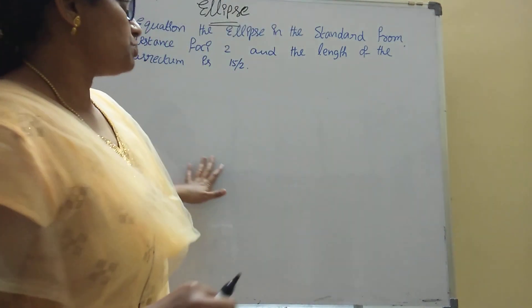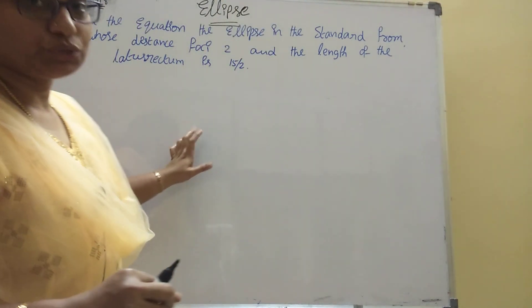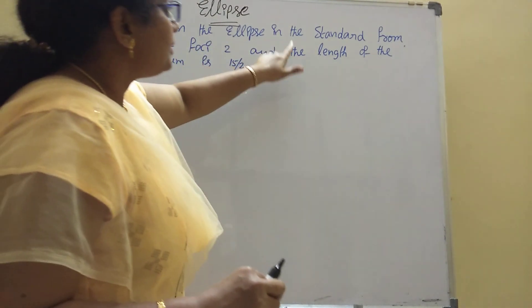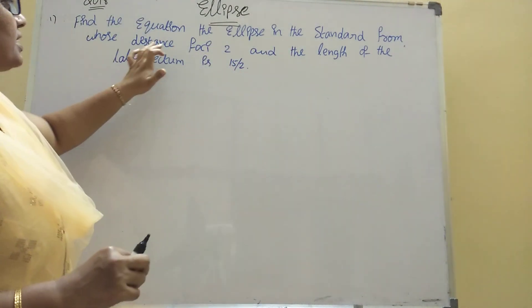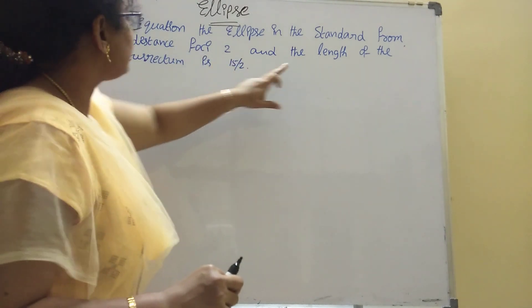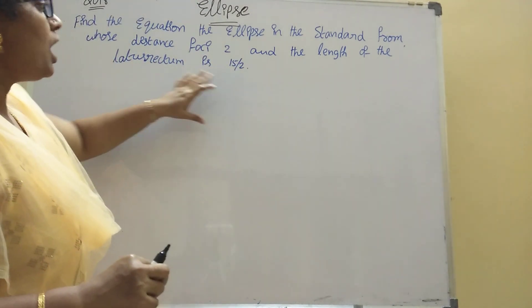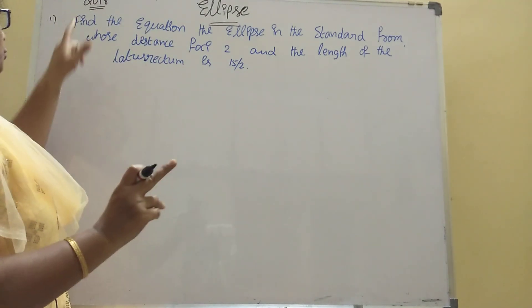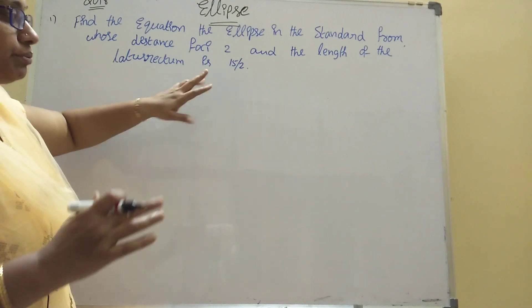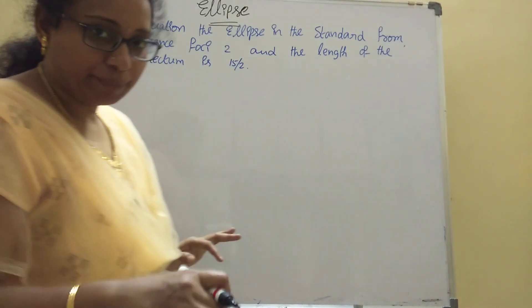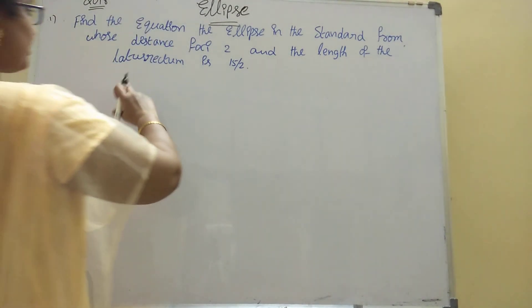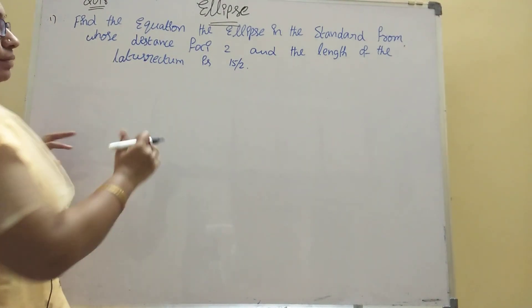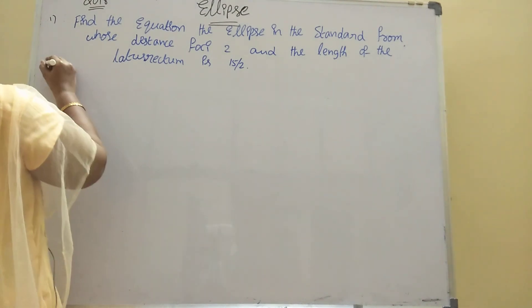The first problem: find the equation of the ellipse in standard form whose distance between foci is 2 and the length of the latus rectum is 15/2. This model appeared in 2019 and 2018 exams. We will use the distance between foci formula and the latus rectum formula.